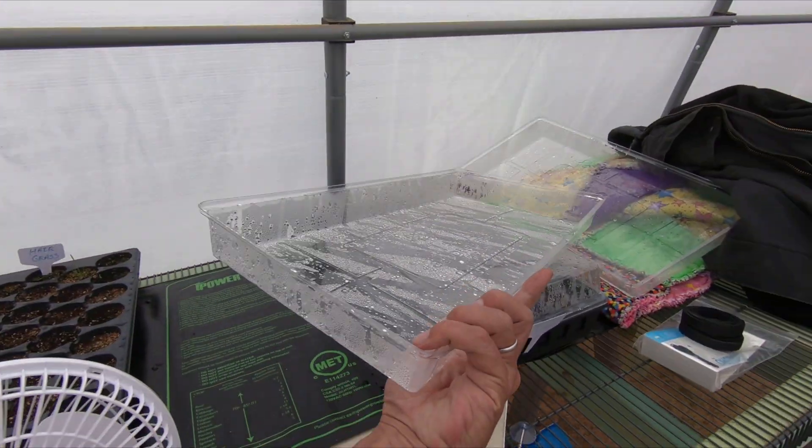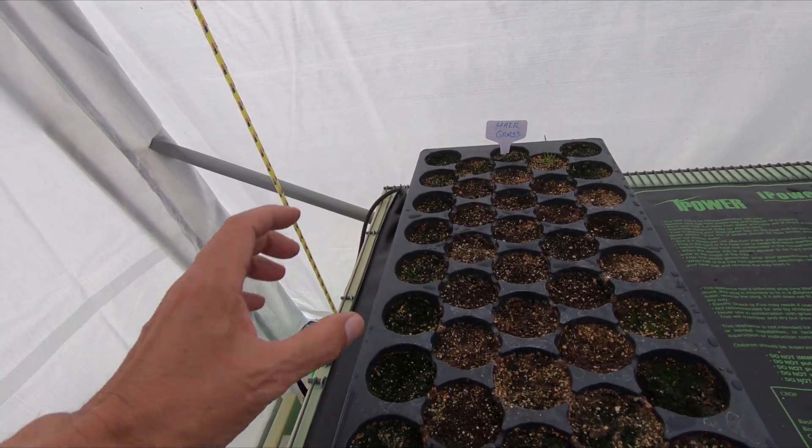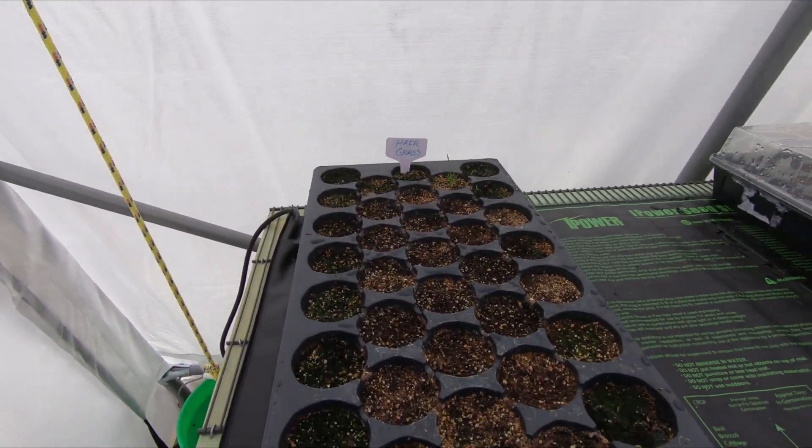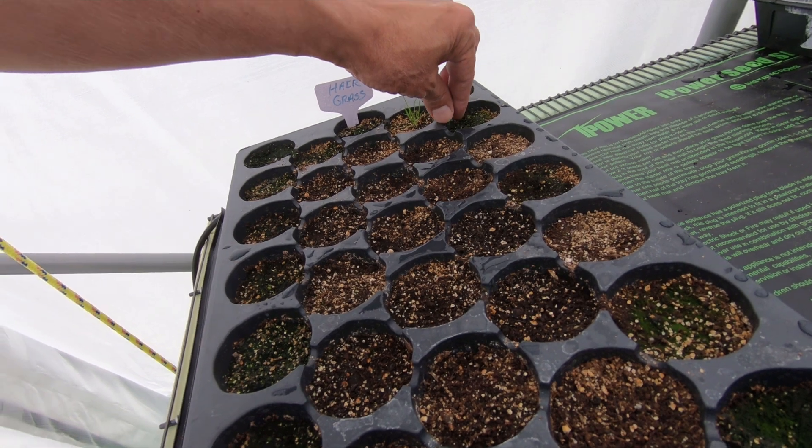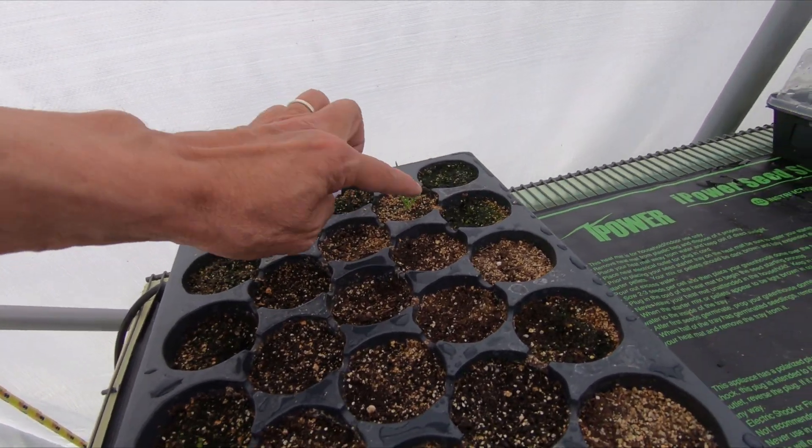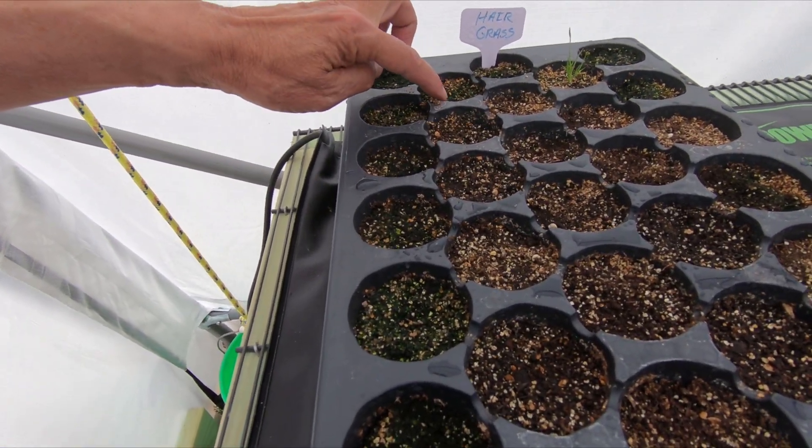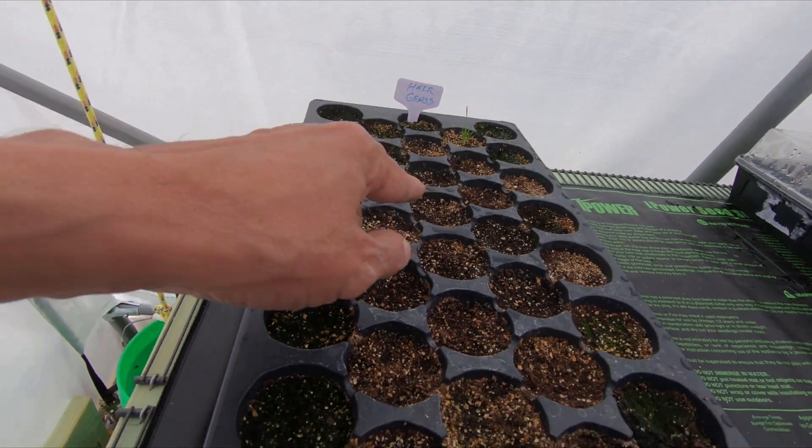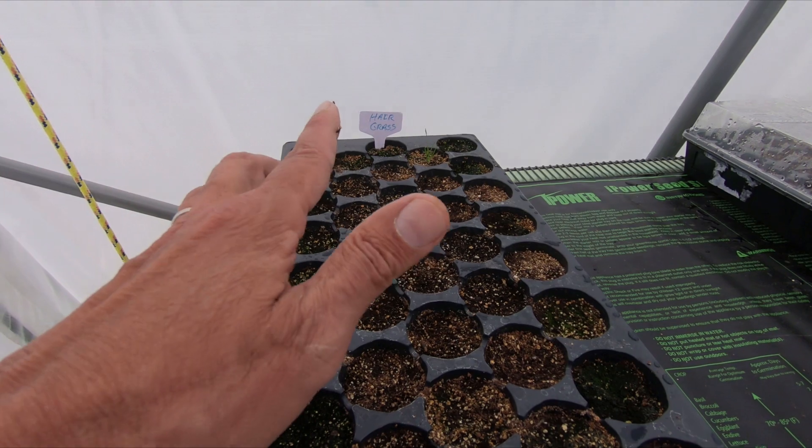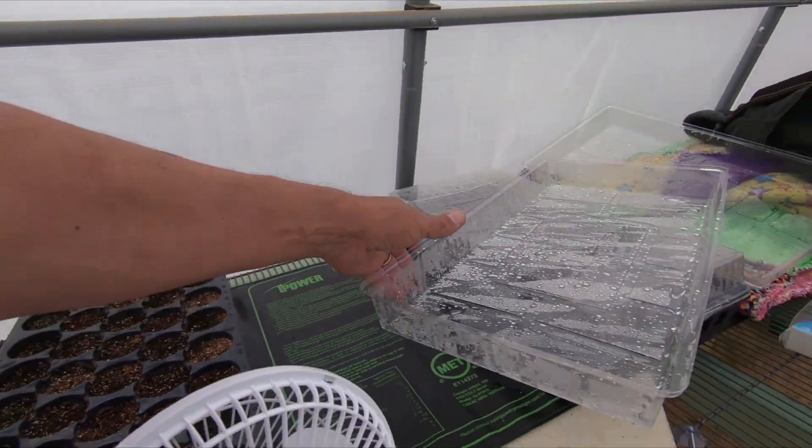This had two blades of grass growing. One looked exactly like a weed grass, and this one. So I kept this one and got rid of the other one. Looks like a little bit of mold on the surface. A little bit of mold right there too. Got to watch this so I don't get gray mold.